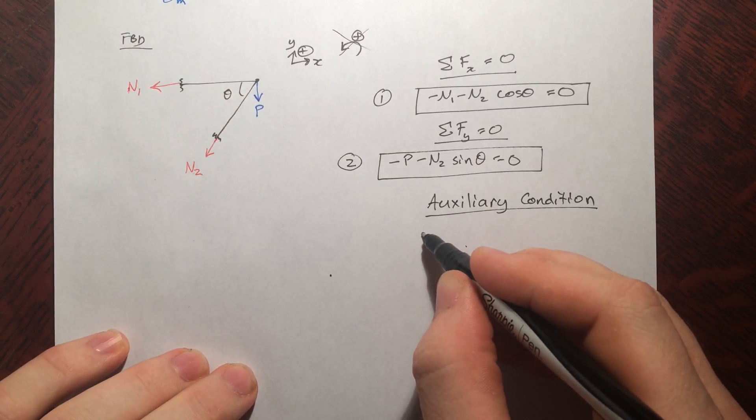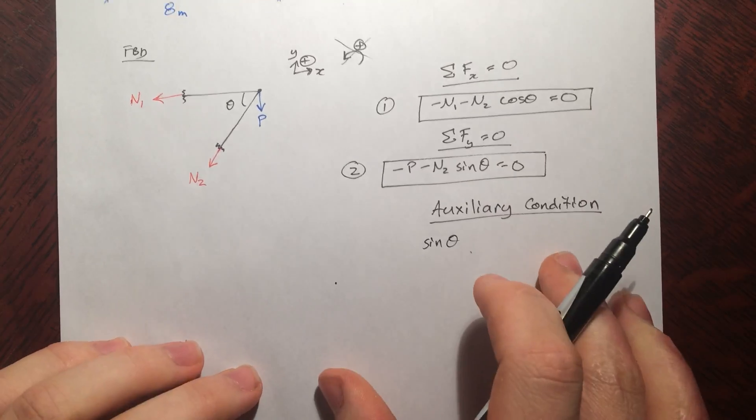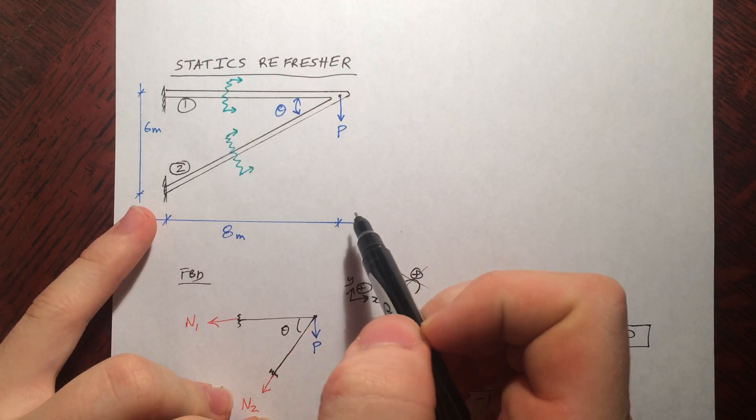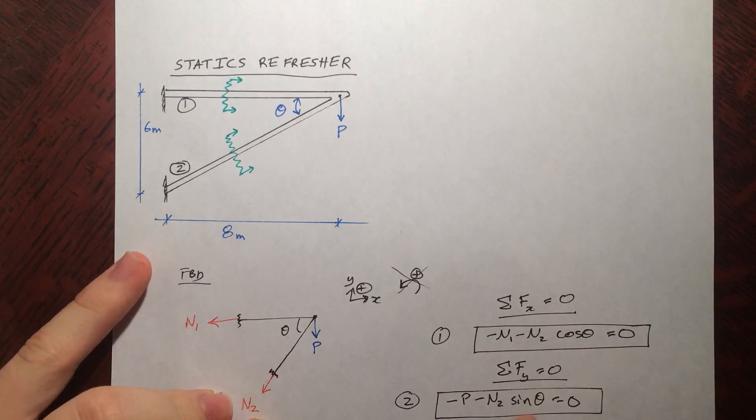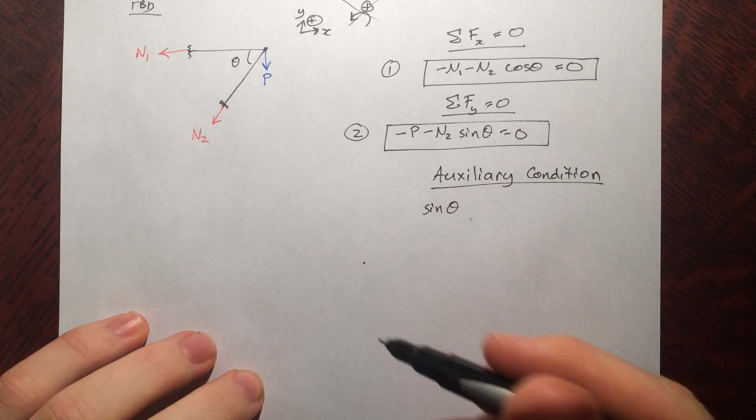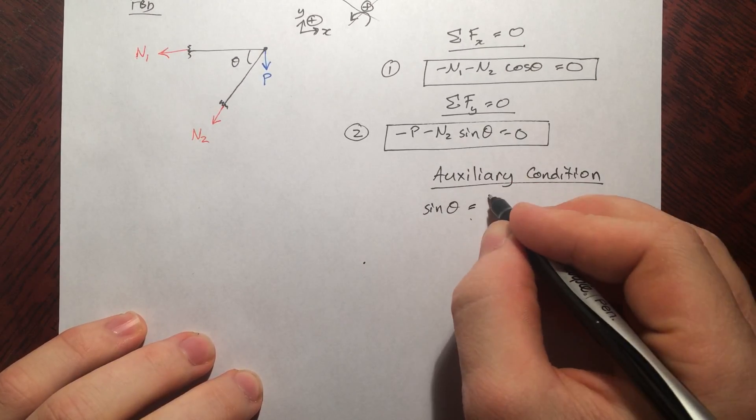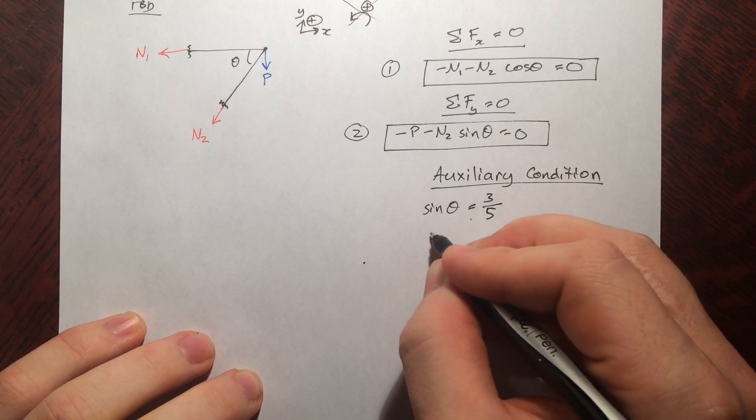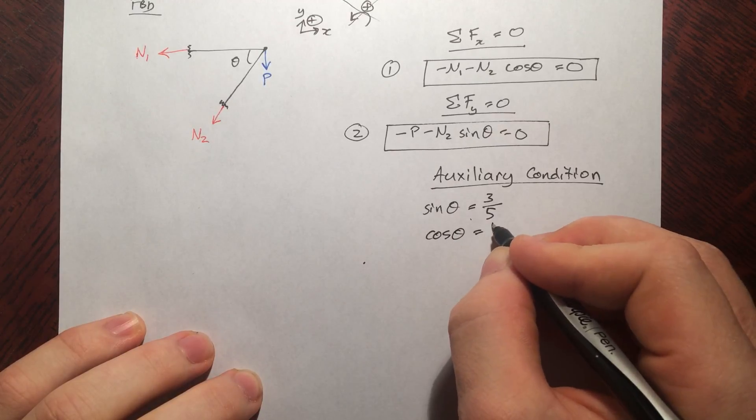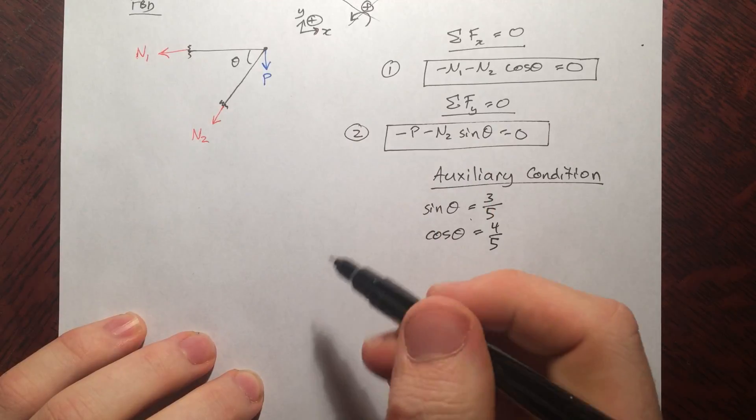So we can say sine theta is of course this over 10. So 6 over 10, that's 3 fifths. And then by the same logic, the cosine of that theta is 4 fifths. Alright. There we go.